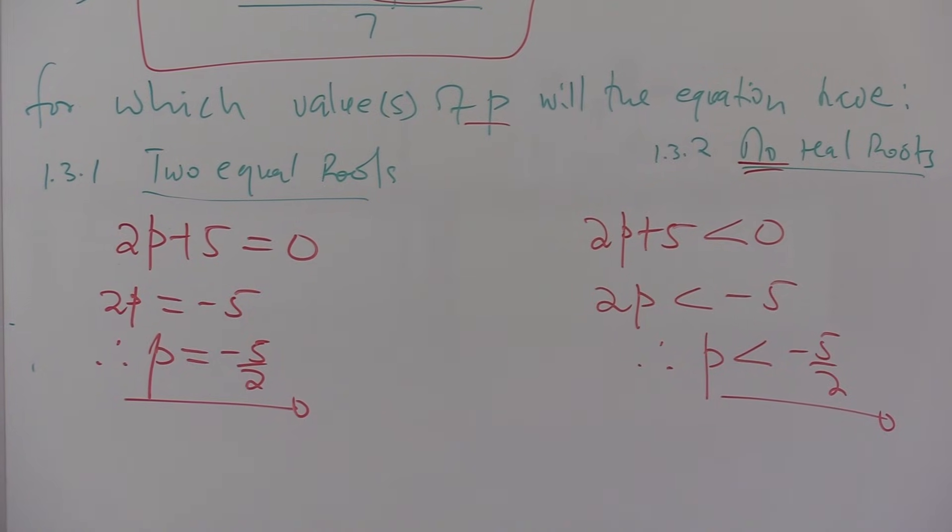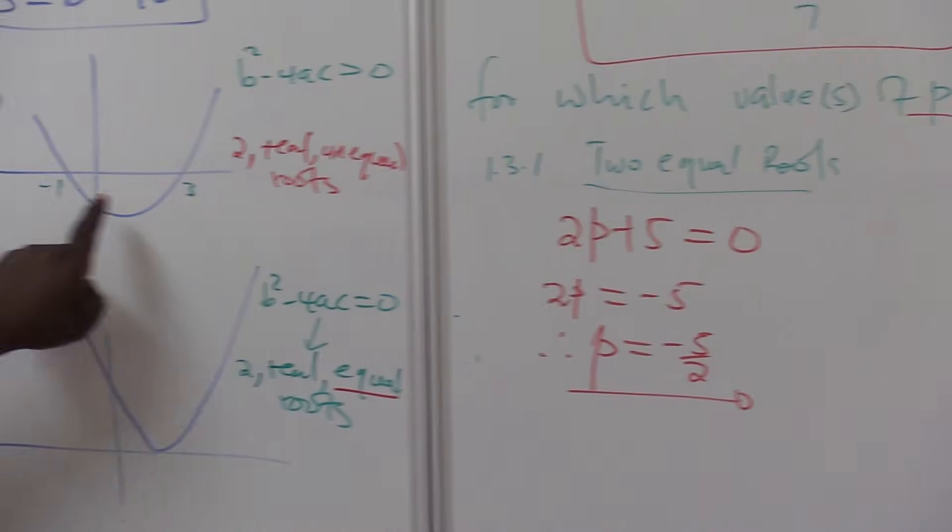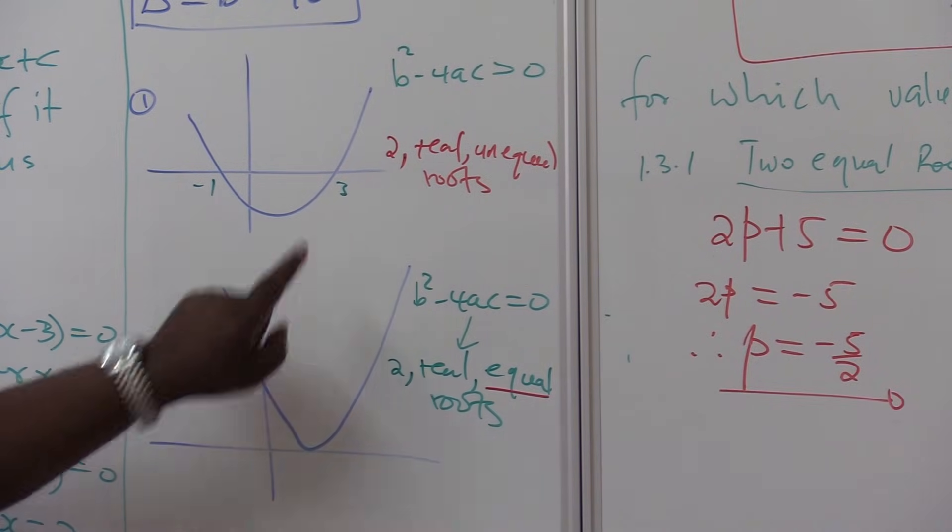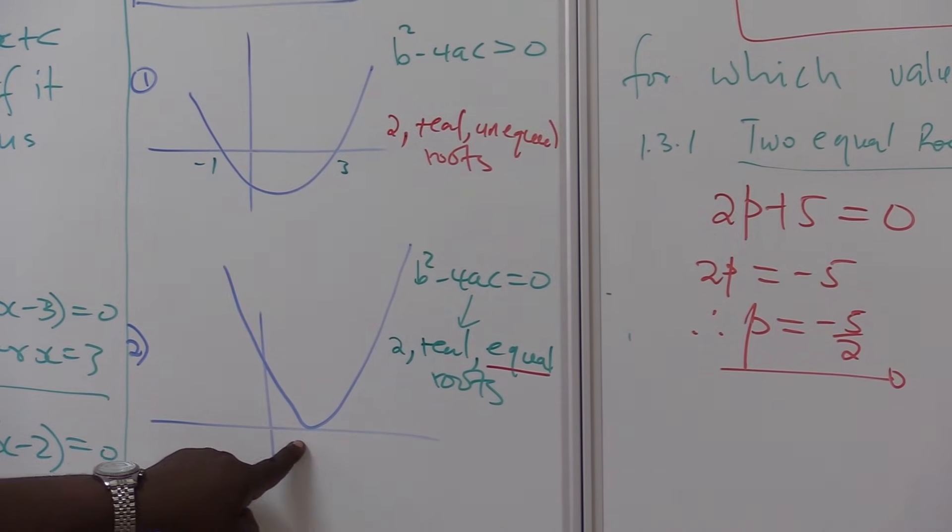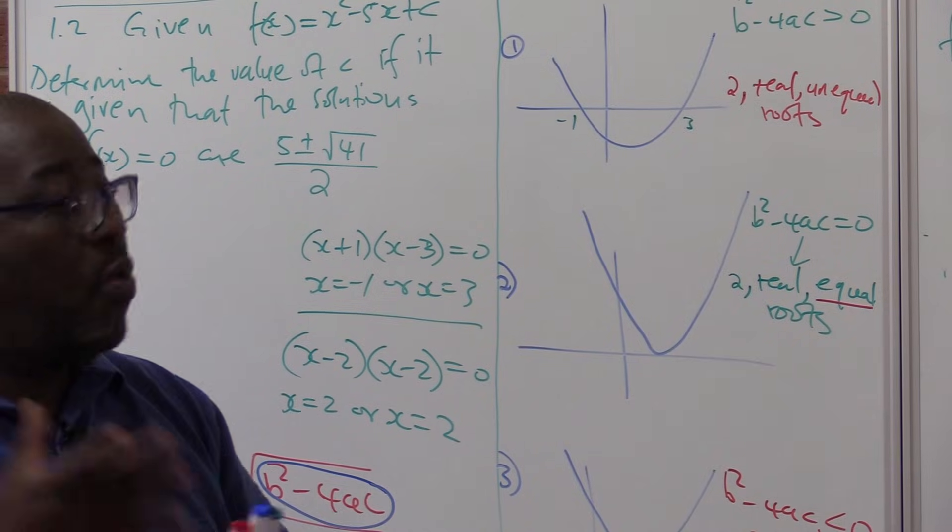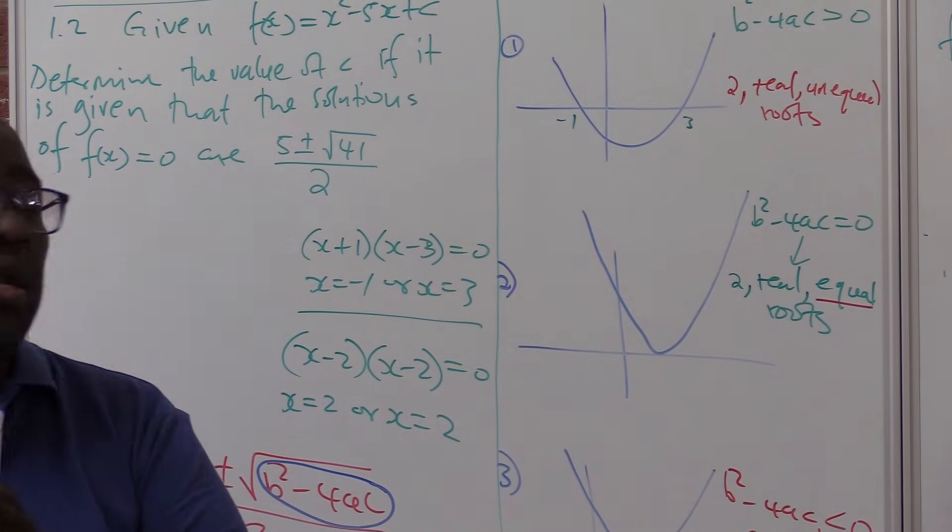Roots can only behave in three ways. In this way, we've got two real and unequal roots, where you have two real and equal roots, and no real roots. So what do we do when we're dealing with real only?